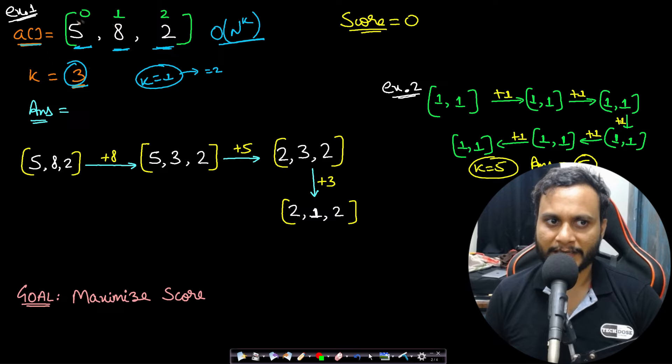If you look at the answer for this, we will be picking 8 first. So our score will start from 0. We will be picking 8 first, so the score will be updated by 8. We will do plus 8 to the score and this value will be reduced by 8 divided by 3 and you take the ceiling of it.